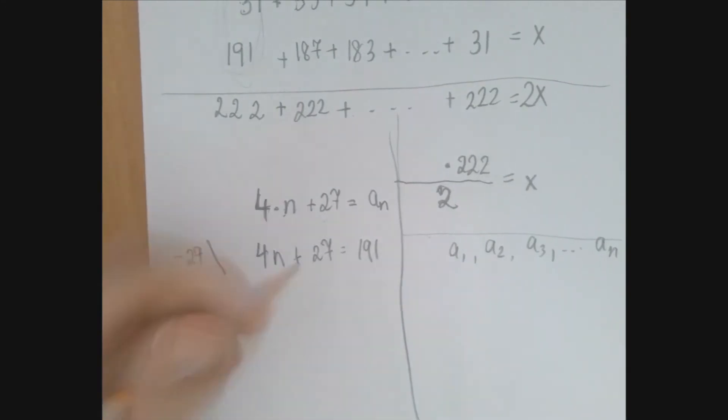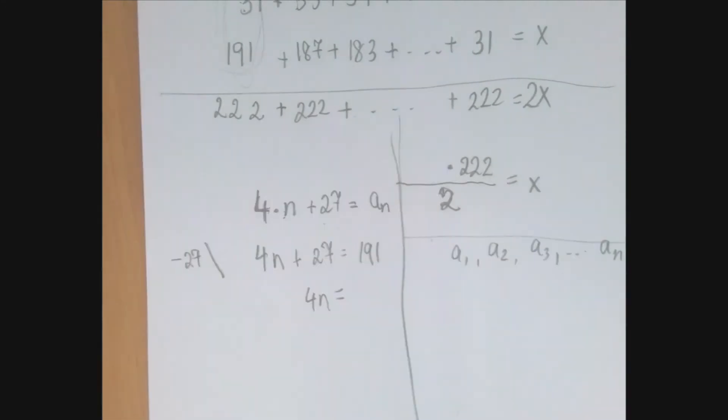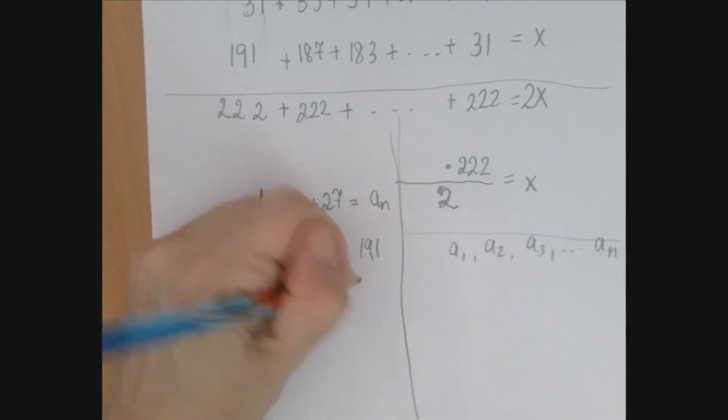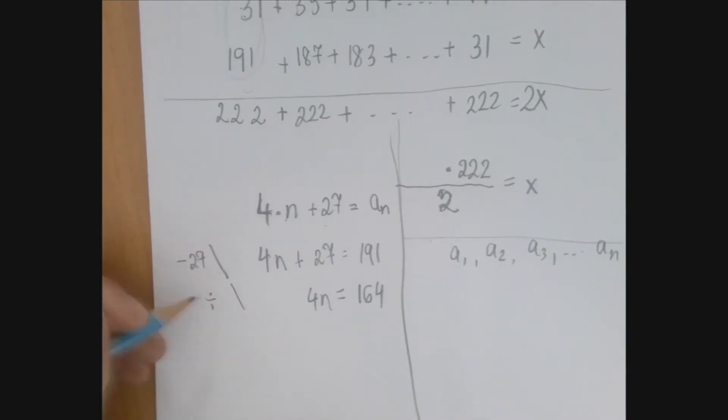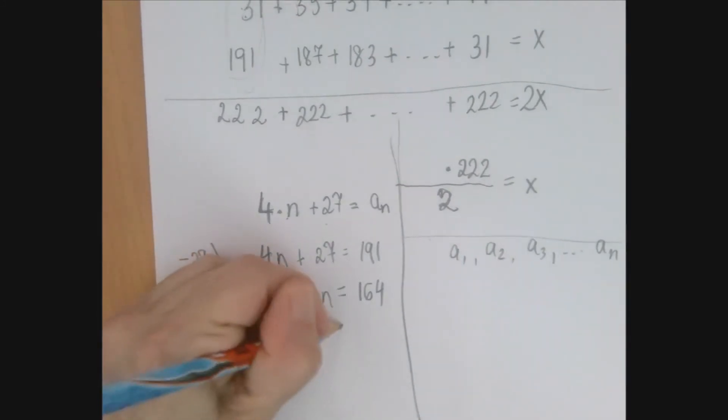So we're going to subtract 27 from both sides, then we're going to get four n here, 164 here. So now we have the equation, four times n equals 164. And so we divide both sides by four, we get n equals 41.